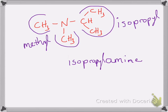You always put the largest group right in front of the amine. Then I have two methyl groups. In naming substituents or groups on nitrogens, you don't number them — you just mention that they are attached to the nitrogen by writing N,N. I have two N's there because I have two methyl groups, so it is N,N-dimethylisopropylamine. That would be the correct naming of that molecule.